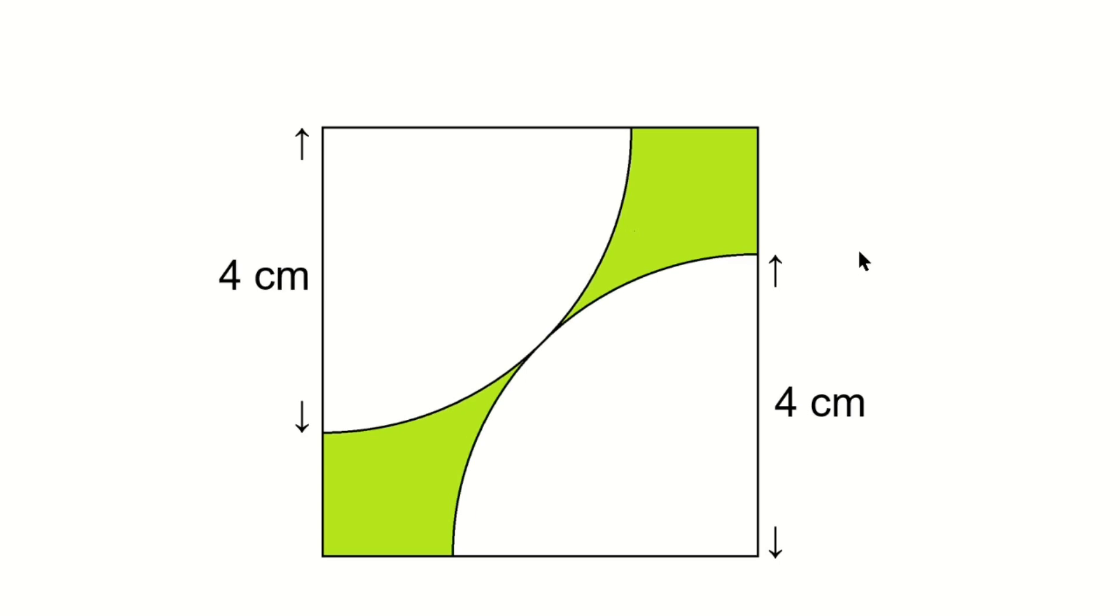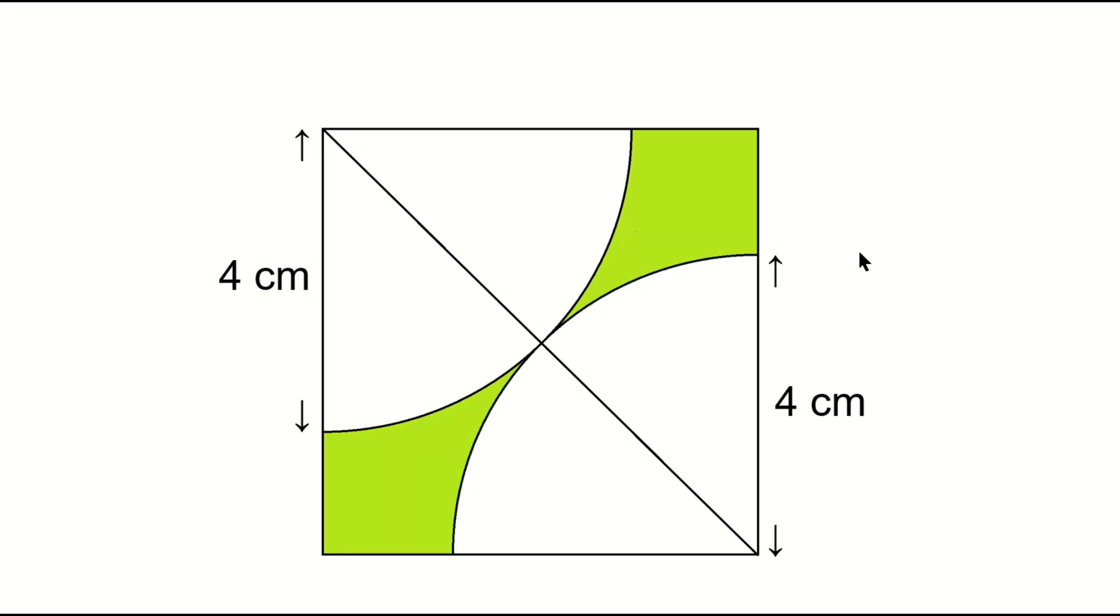Now let's get started solving the problem. At first, draw a line here. This is the radius of the circle, so it's 4 centimeters. This is also 4 centimeters. Therefore, the length of the diagonal of the square is 8 centimeters.